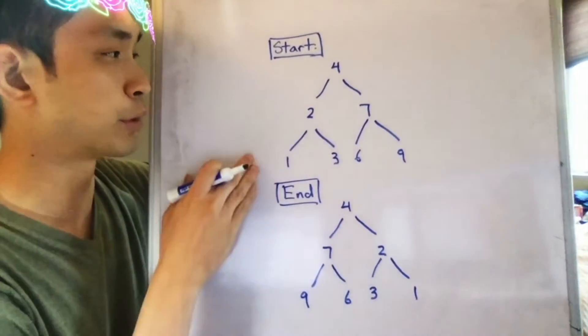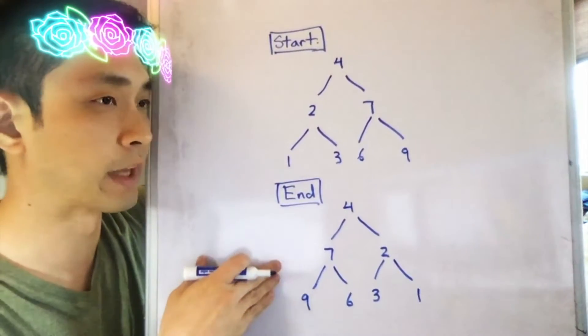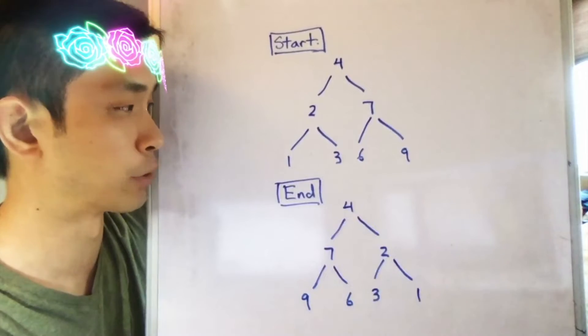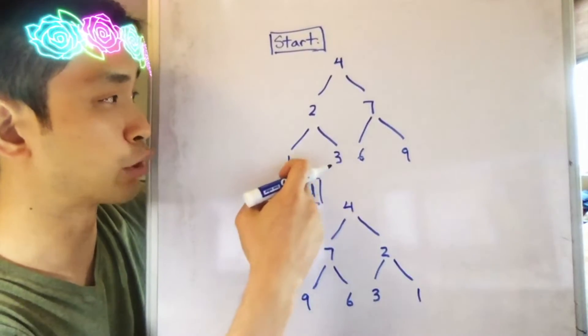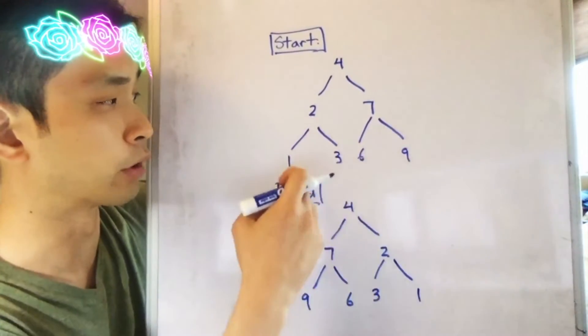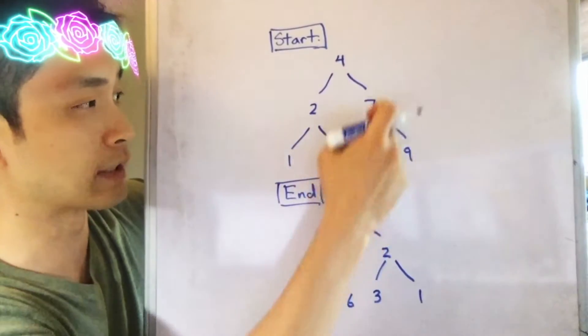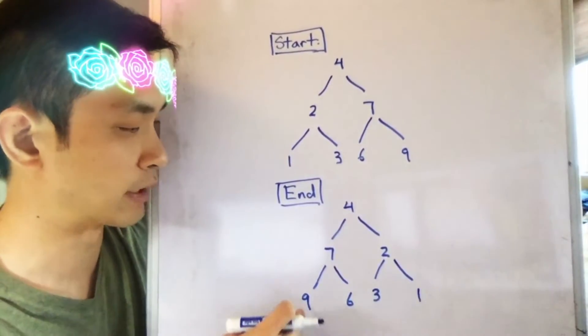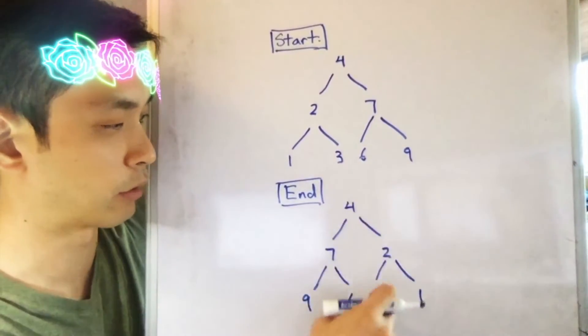All right, so here's our binary tree that we begin with and here's the binary tree that we want to end with. Notice that this is considered the inverted binary tree. The binary tree first is actually sorted in order right: one, two, three, four, six, seven, nine. And the opposite is true for the inverted tree. It's going to be nine, seven, six, four, three, two, one.